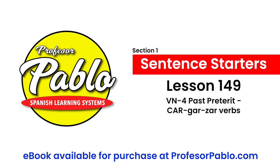Explicar: expliqué — I explained; explicaste; explicó; explicamos; explicaron. Remember, five verb conjugations always: the first is I, the second is you (familiar), the third is he, she, it, or you (usted), the fourth is we, and the last is they.